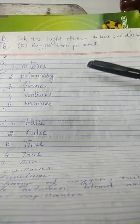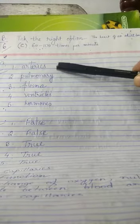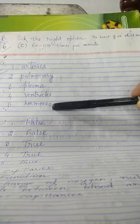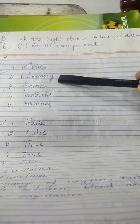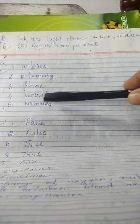Fill in the blanks. So these are the answers to the questions. First one is arteries, second is pulmonary, third is plasma, fourth ventricles, fifth hormones.